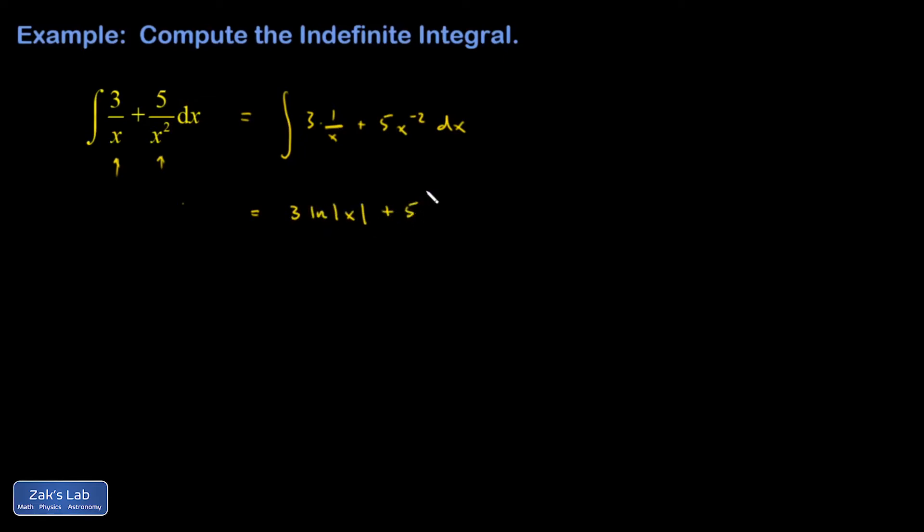My second piece, I use the power rule. So I add 1 to the exponent and divide by the resulting number. That's x to the negative 1 divided by negative 1, which is the same as just putting times negative 1 here.